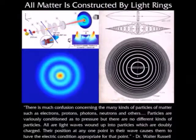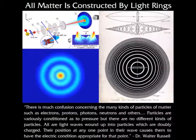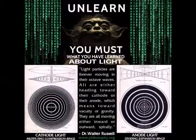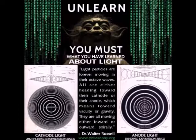Conditioned as to pressure, but there are no different kinds of particles. All our light waves wound up into particles which are doubly charged. Their position at any one point in their wave causes them to have the electric condition appropriate for that point. Light particles are forever moving in their octave waves, all either heading toward their cathode or their anode, which means toward vacuity or gravity. They are all moving either inward or outward, spirally.